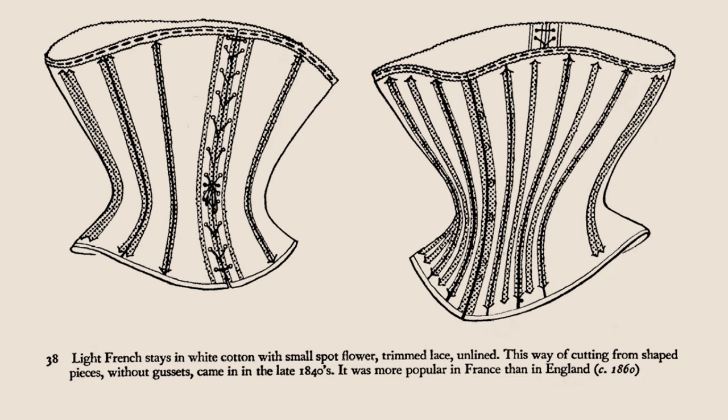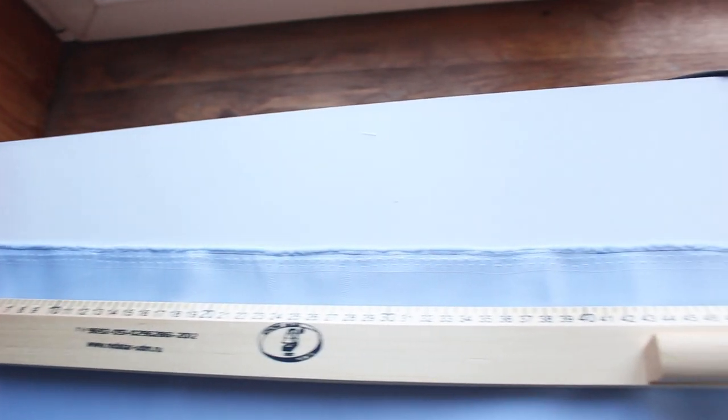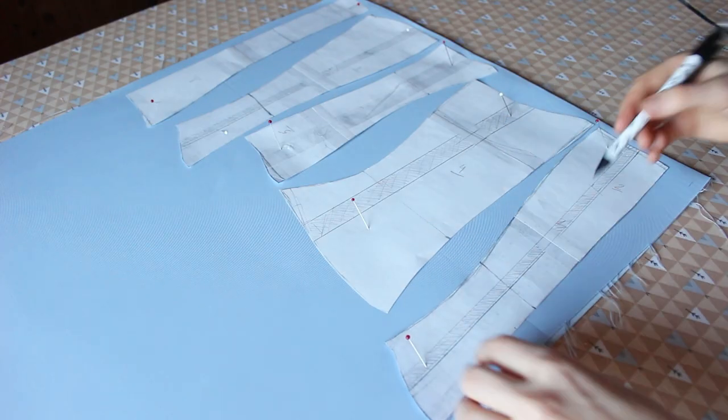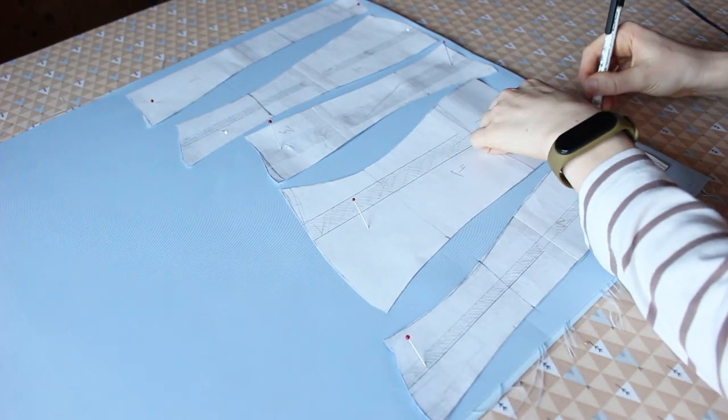Speaking of fabric, I chose this light blue satin from my stash. It's a heavy satin, and it doesn't stretch at all, so I used only one layer of fabric. The description in the book also says that light stays and they are unlined.